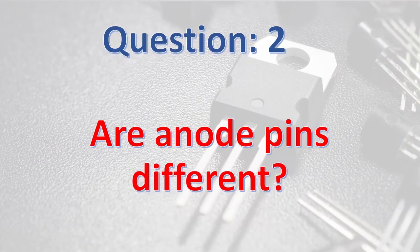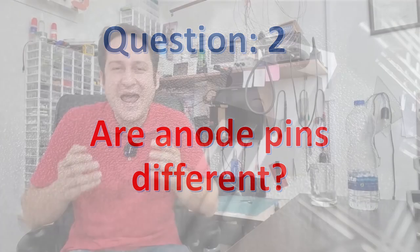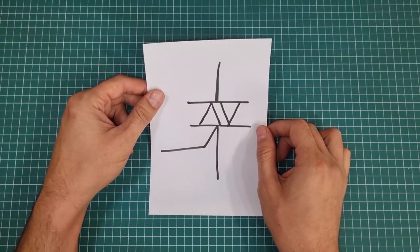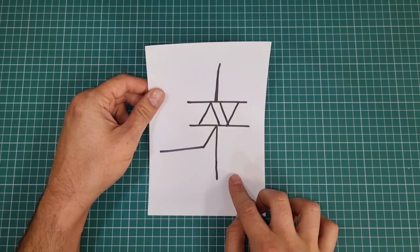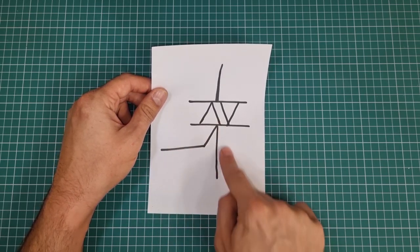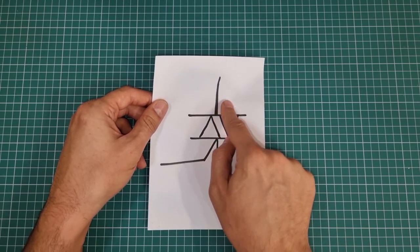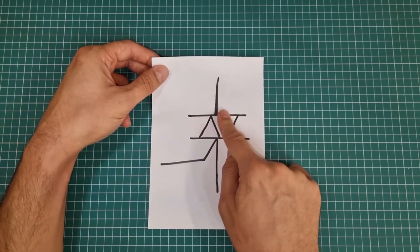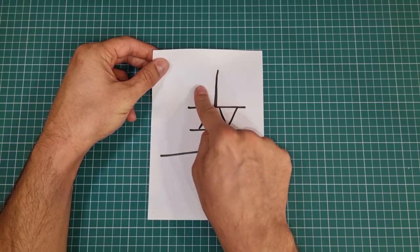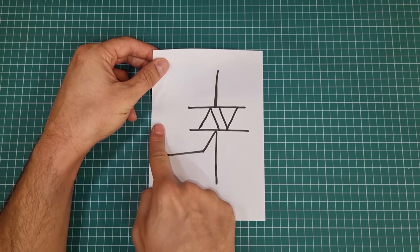Question number two: Are anode pins different? The answer is yes. They are different. From switching aspect, there is no difference between anode 1 and anode 2. I mean, they act like an ordinary switch that passes electricity in either direction. But from triggering aspect, they are different. Look here in a schematic symbol of triac. One anode is beside gate pin, here this one, and the other is on opposite side of gate pin. The anode on opposite side of gate pin is eligible to trigger gate pin of triac.